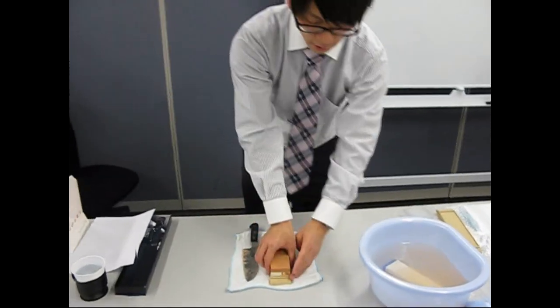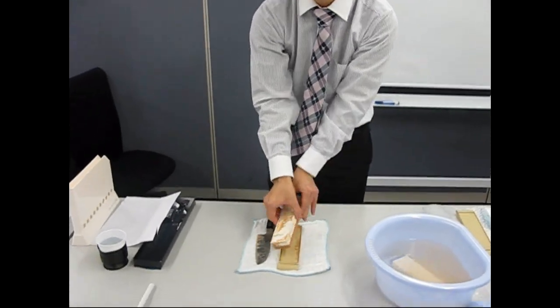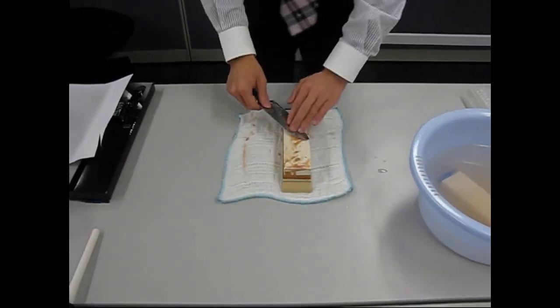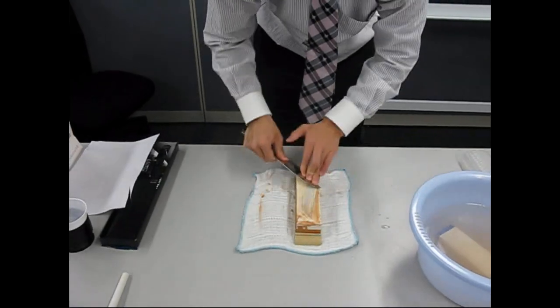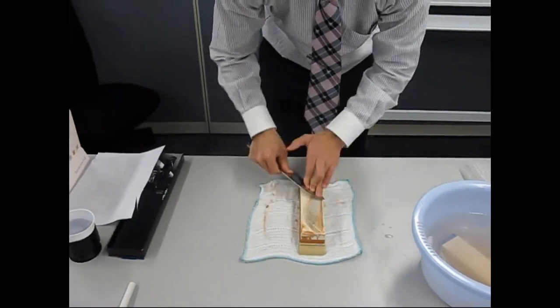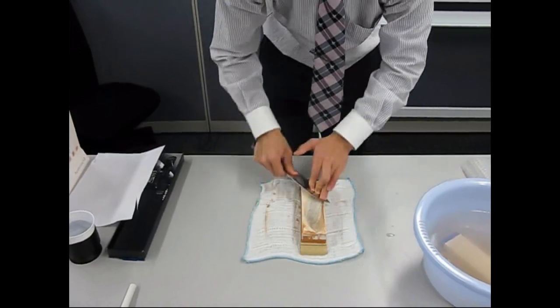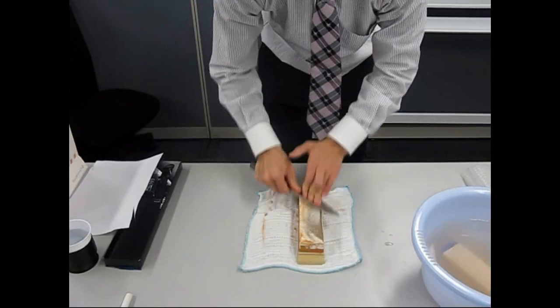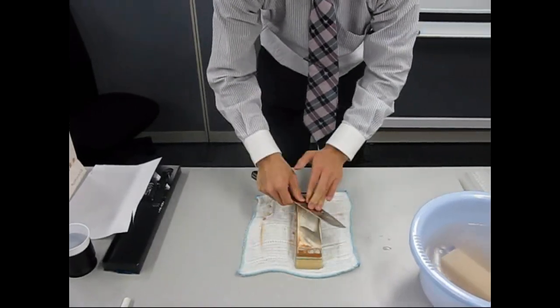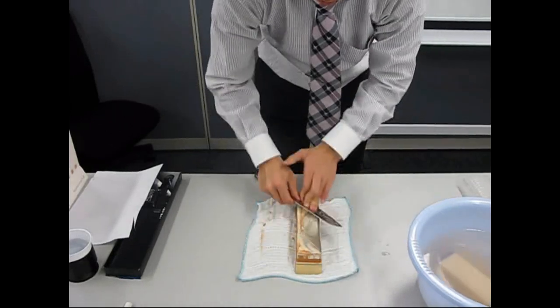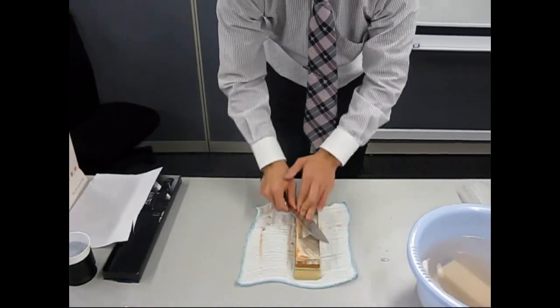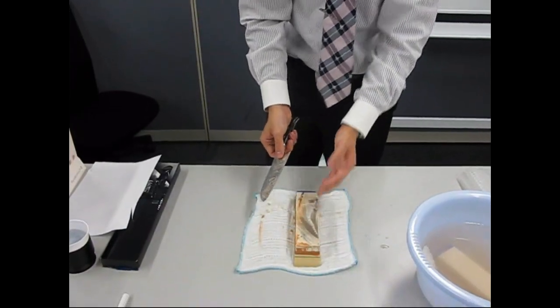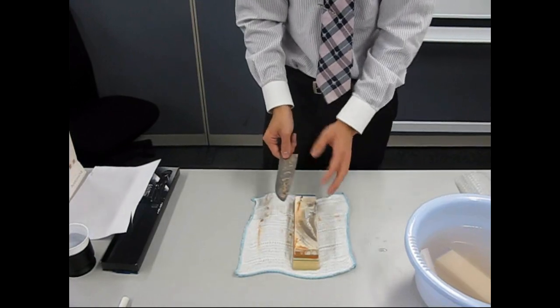Next, grind with the fine side to complete the sharpening. While you are grinding kitchen knives, water that looks gray will come out from the wet stone. But this water is necessary for grinding, so please do not wash it away.